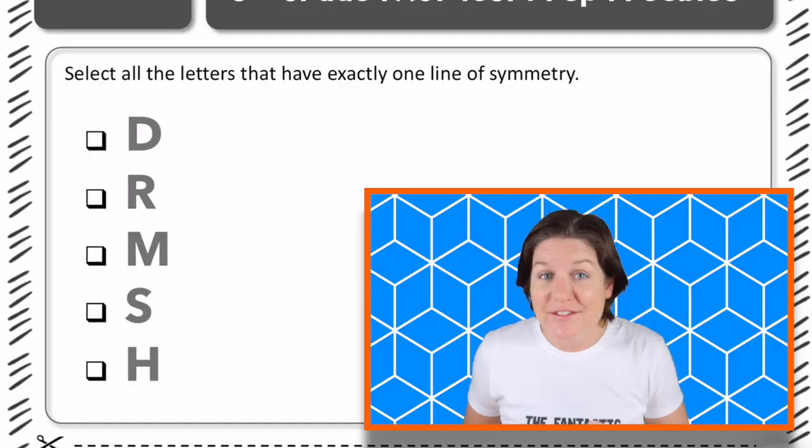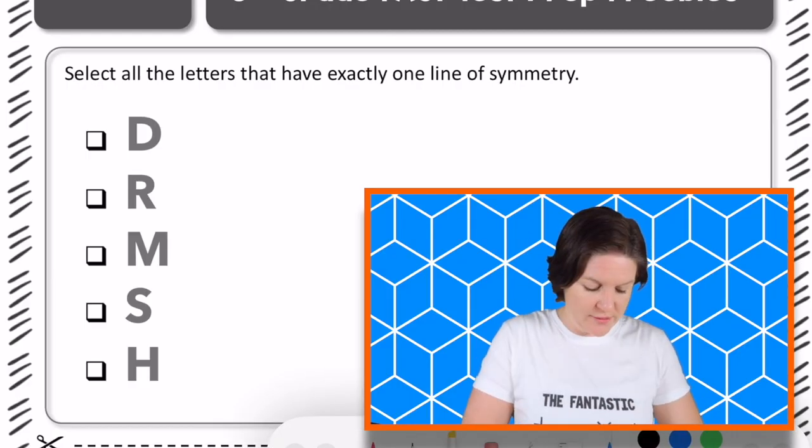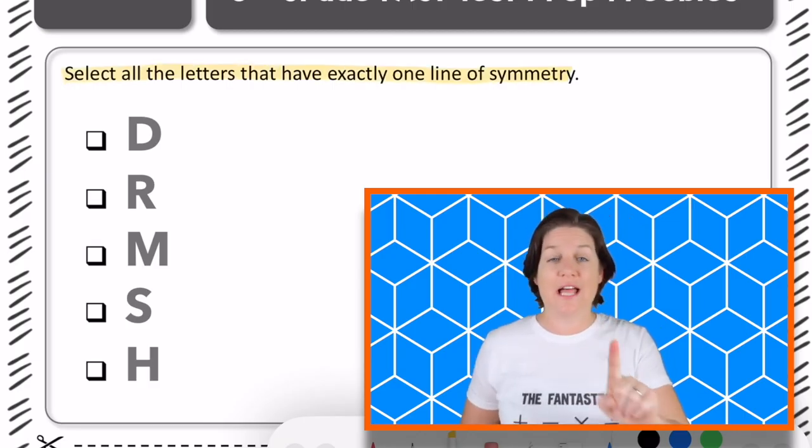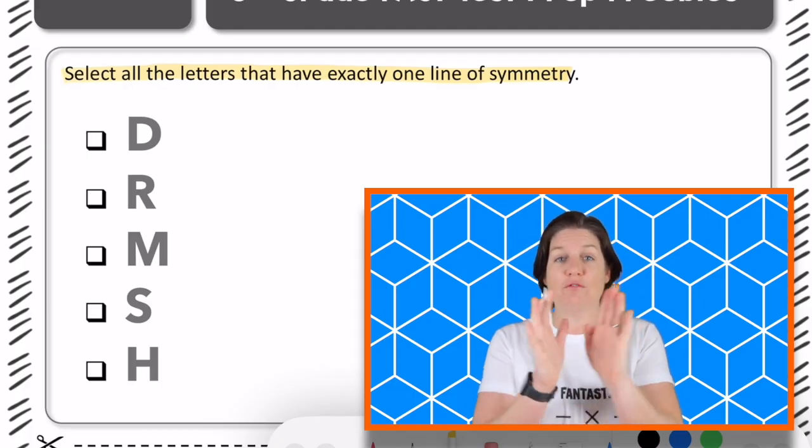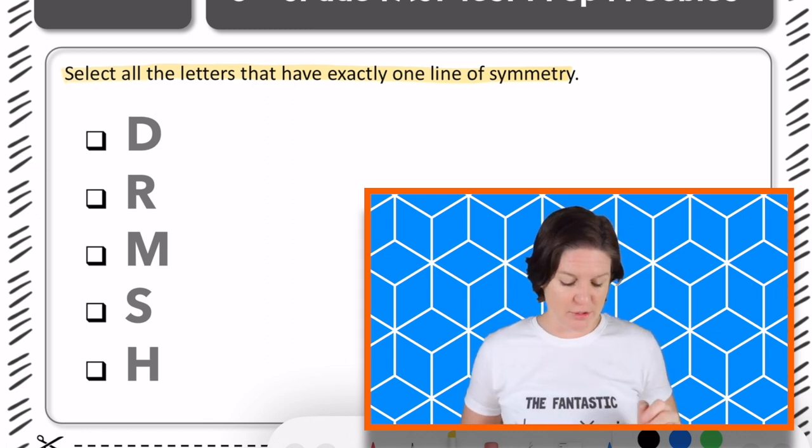Welcome back, 3rd grade. Let's go over this one. So this one says to select all the letters that have exactly one line of symmetry. A line of symmetry is when you can create a line, and if you were to fold on that line, you would have mirrored images on both sides.